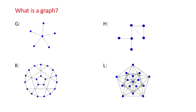Here are two more examples of graphs K and L. Both of these are a little bit more complicated — complicated only in the sense that they have quite a few more vertices and edges. They're not actually considered complicated graphs yet in the grand scheme of things.